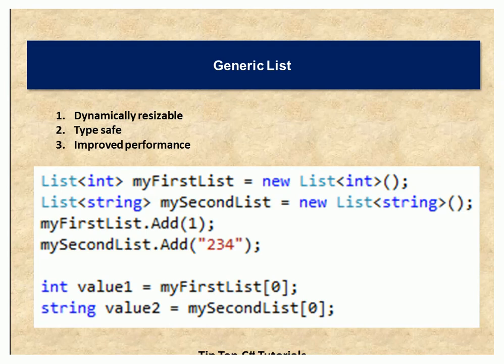To retrieve a value from a generic list it is straightforward: using an indexer, int value1 equals myFirstList[0], or string value equals mySecondList[0]. In index-based retrieval you do not need to perform any boxing or unboxing conversion. Those are the advantages of generic list. If you ask what the downside is, there are no major downsides — it has been the de facto standard for collections in C-Sharp since .NET 2.0.